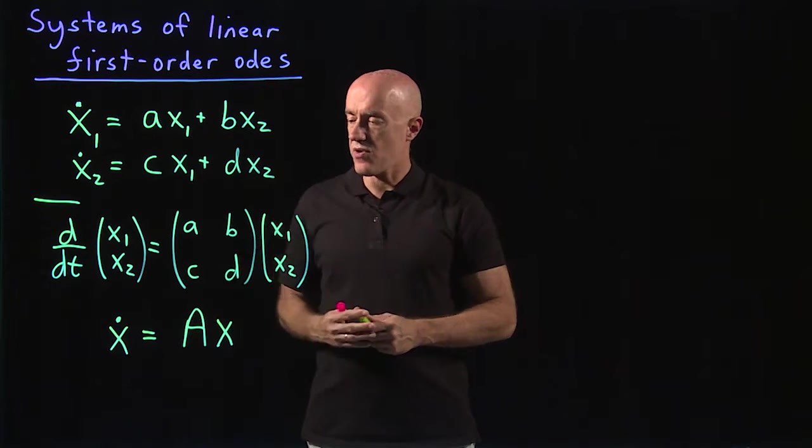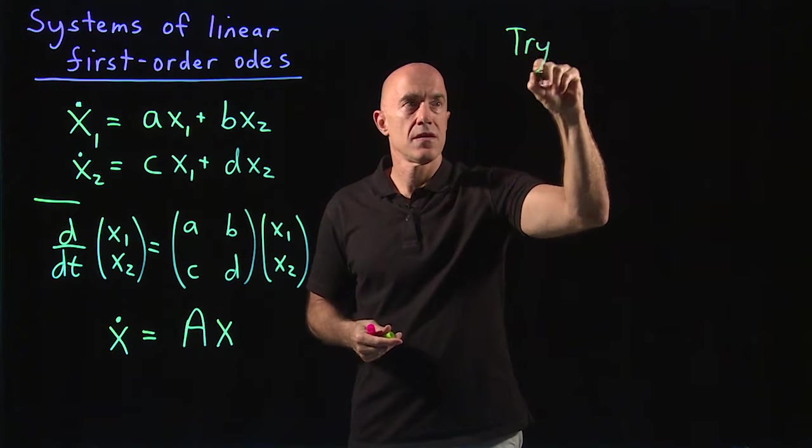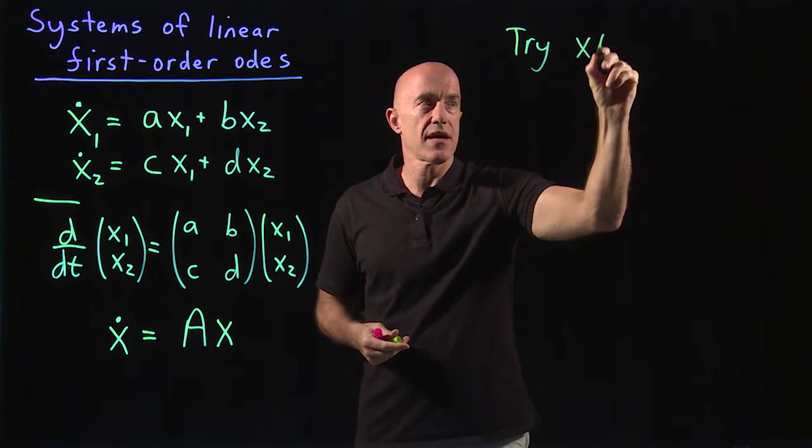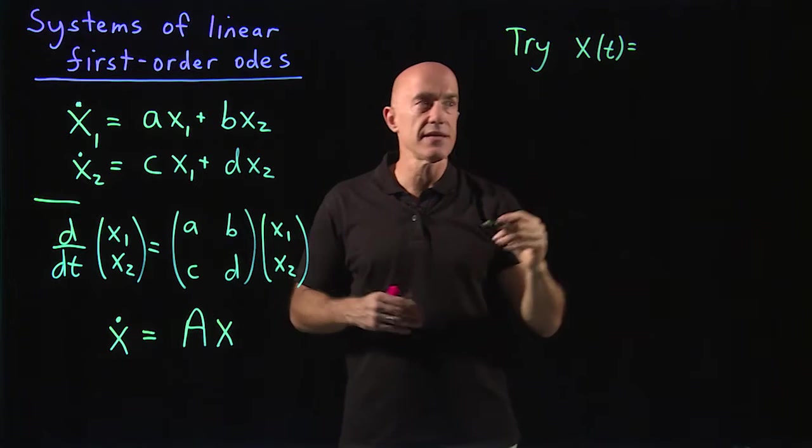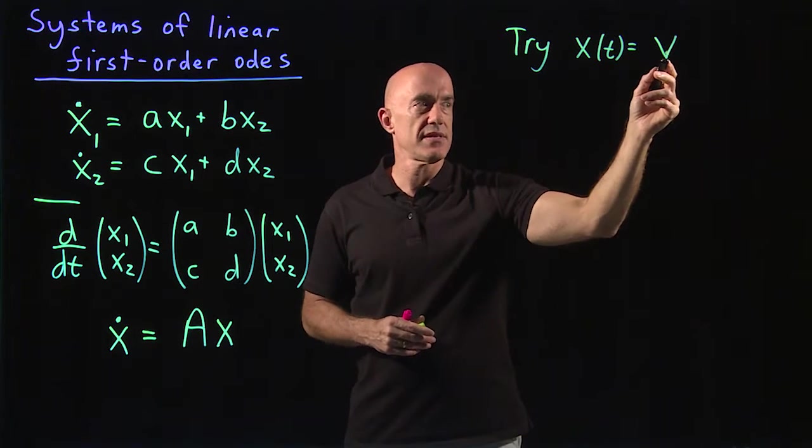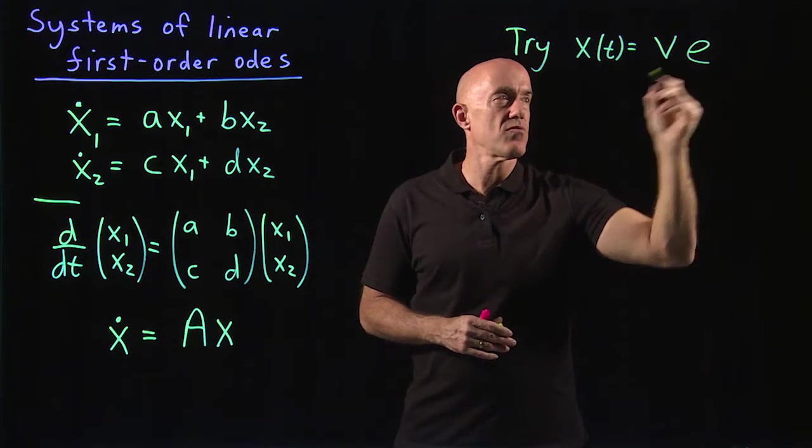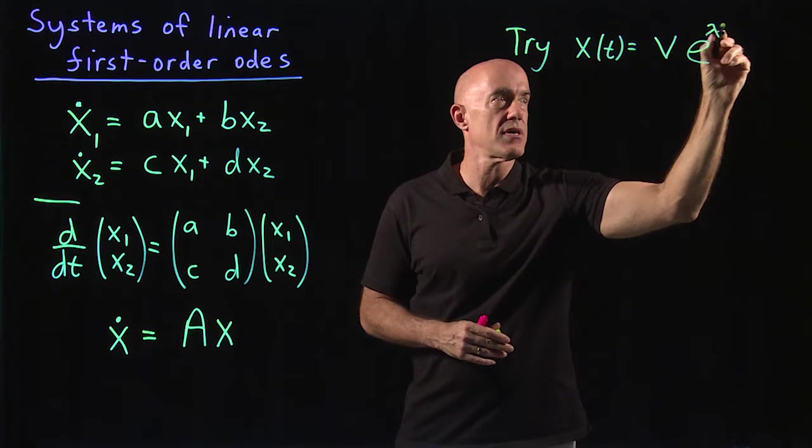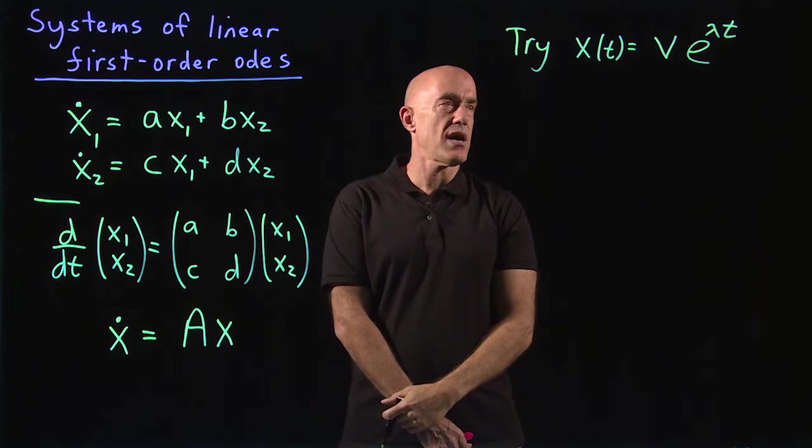So what is the right ansatz here? We're going to try x of t, the column vector, equal to a constant column vector, which I'll call v. So this is a 2 by 1 matrix, times an exponential, and we'll call that e to the lambda t. Okay, that will be our ansatz.